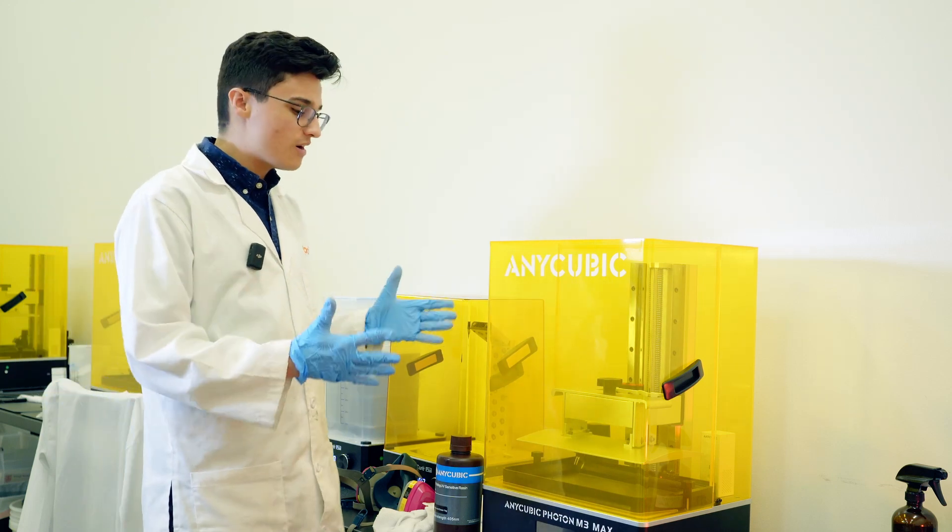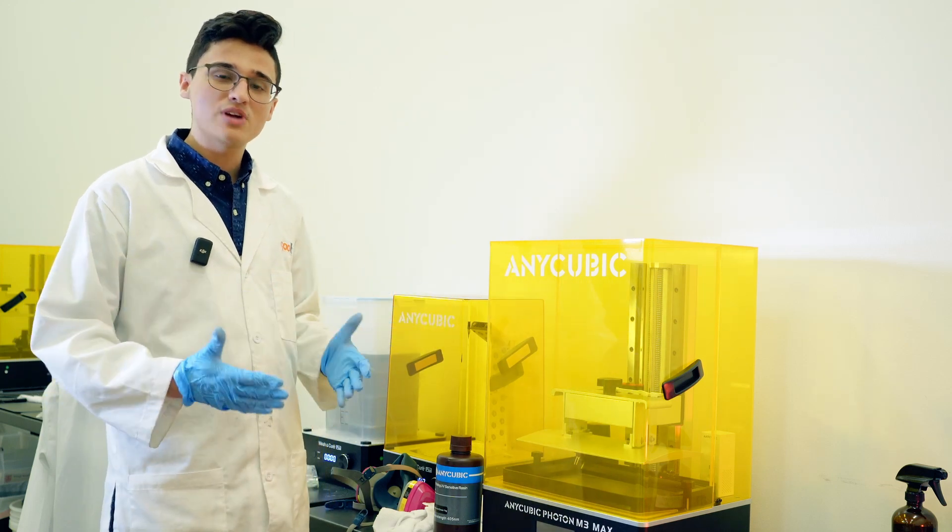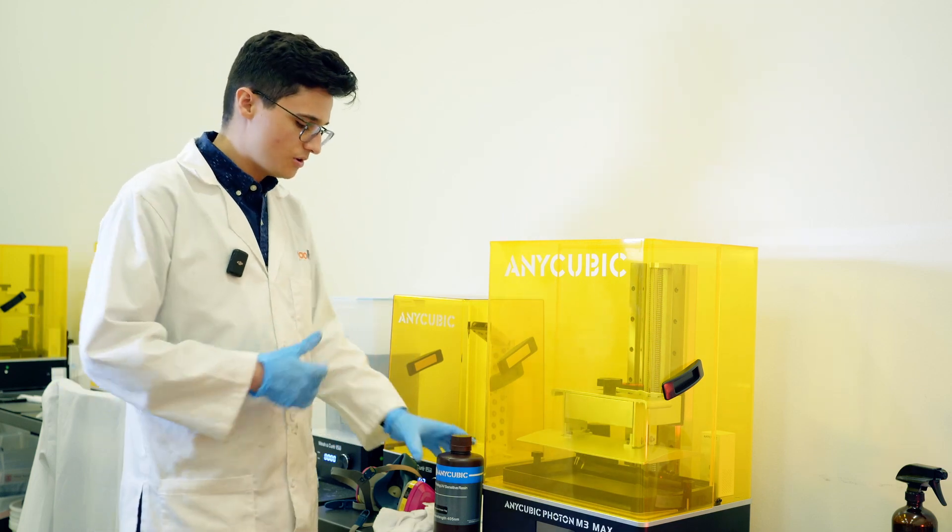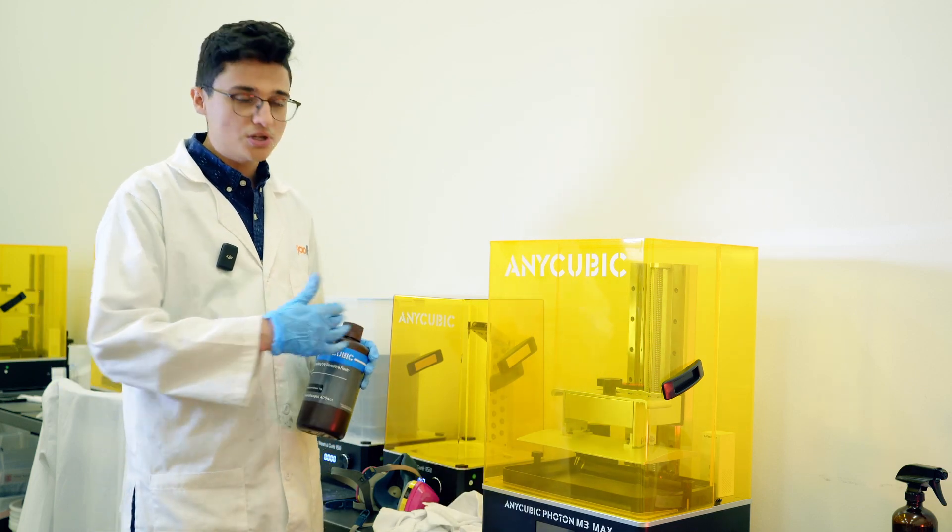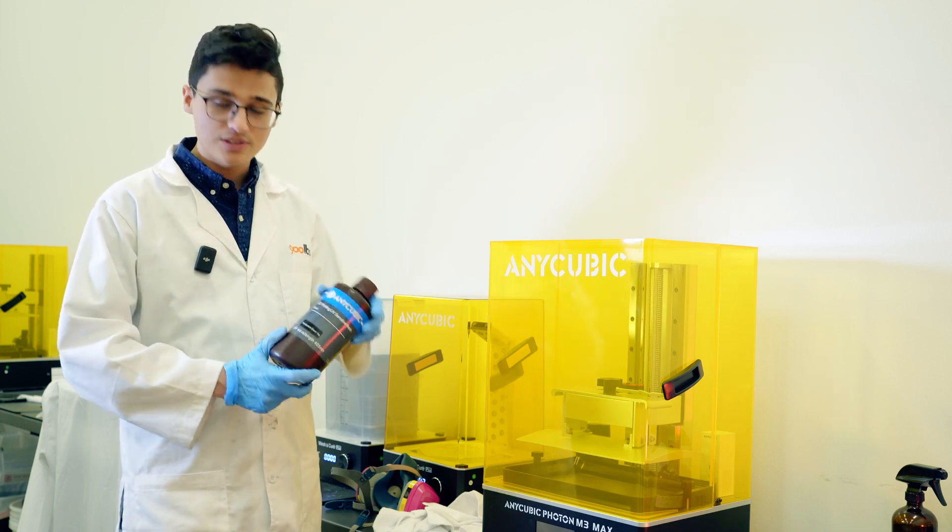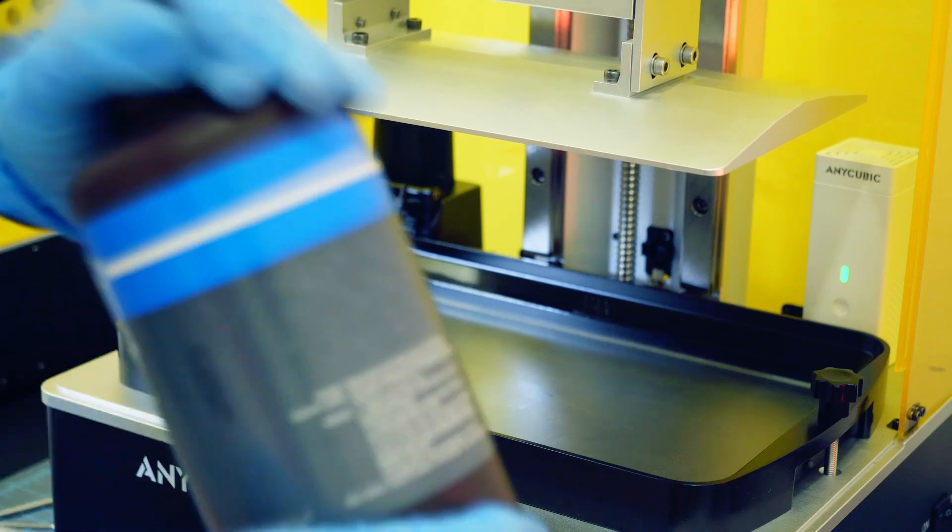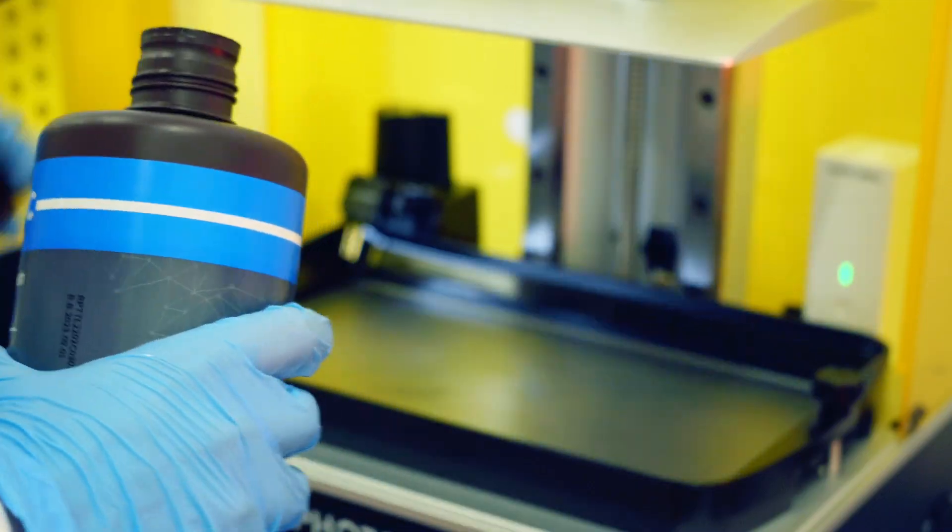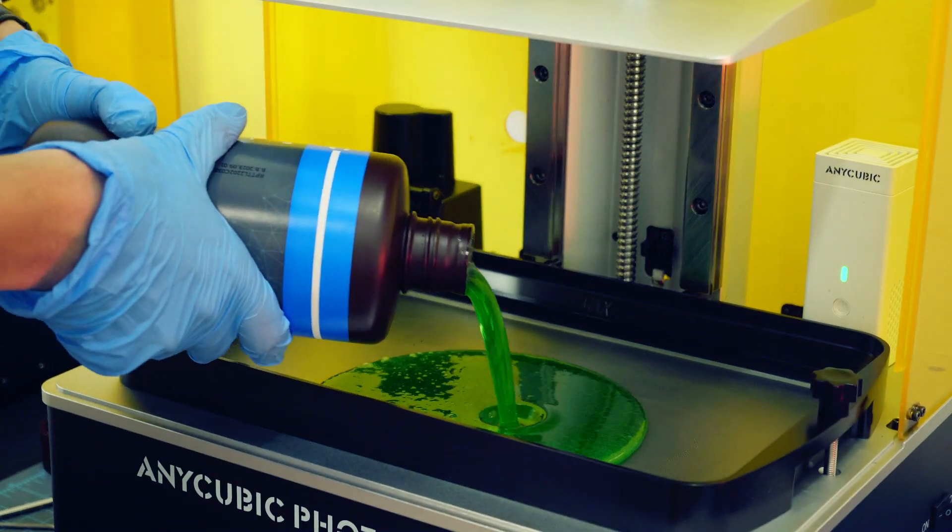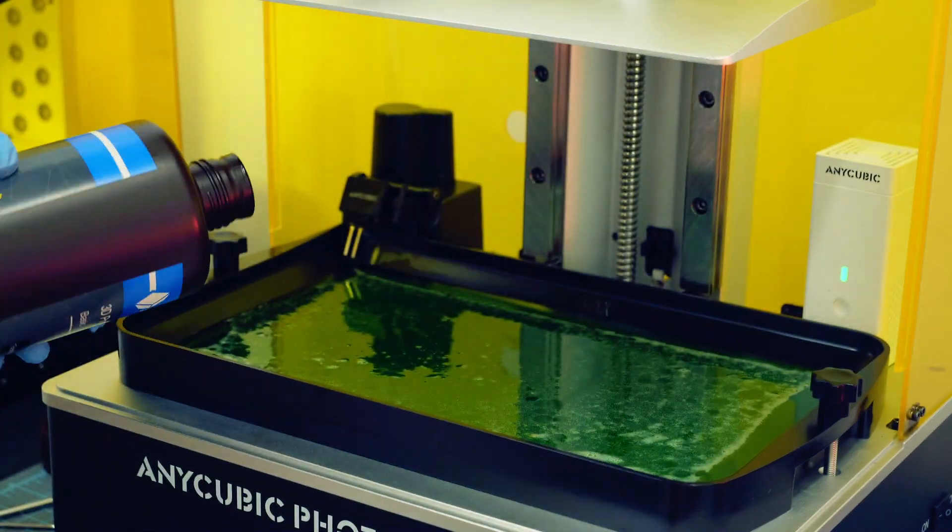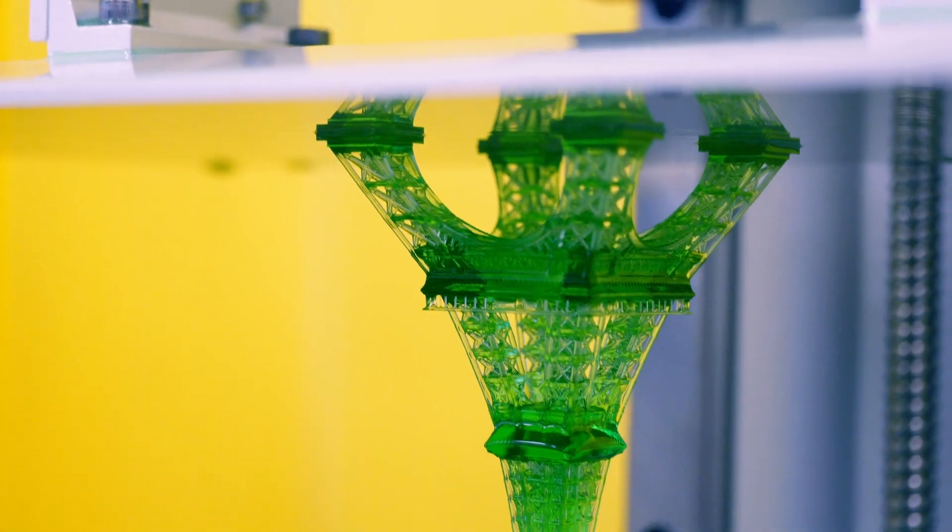Okay so we now have our printer fully reassembled and we're ready to do a print. I want to do a test print before I call this printer ready for production. So part of what I'm going to do is I'm going to go ahead and fill up this vat with this translucent green from Anycubic. It's just their standard basic resin but with a really cool transparent green. I've actually been able to get some really fine detail with this resin in particular and has some pretty cool looks to it.